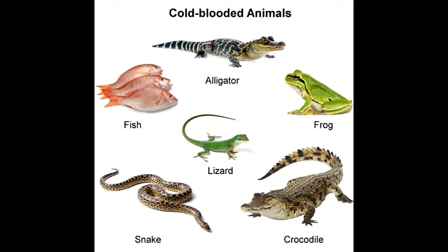Cold-blooded animals vs. warm-blooded animals characteristics. Ectothermy: regulation of body temperature by external processes like basking in the sunlight. Poikilothermy: functioning of the animal's body processes across a wide range of temperatures.